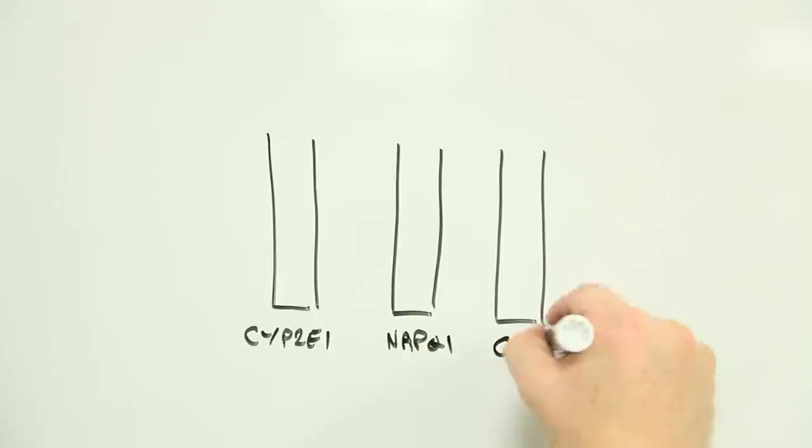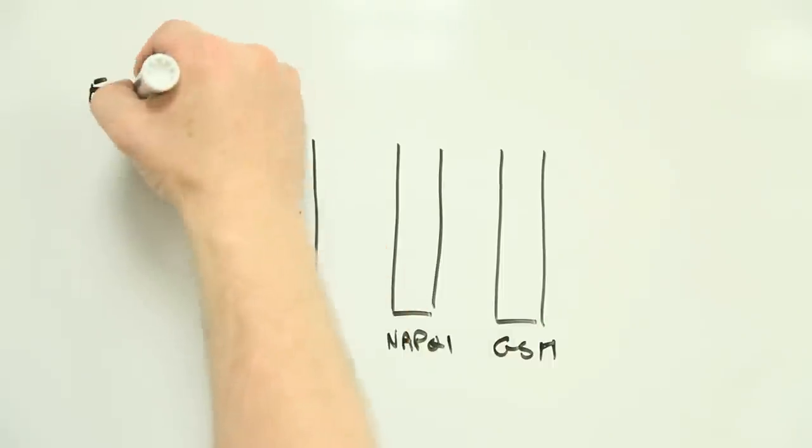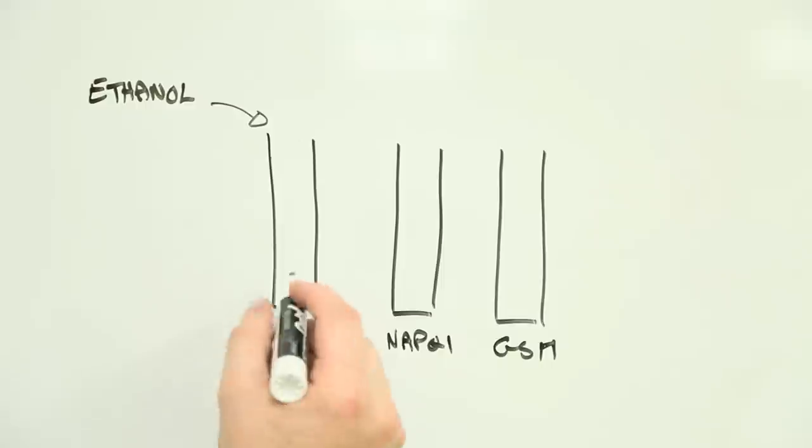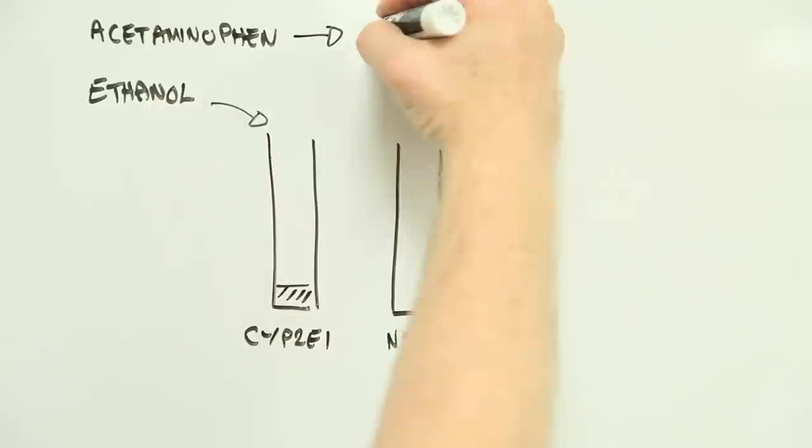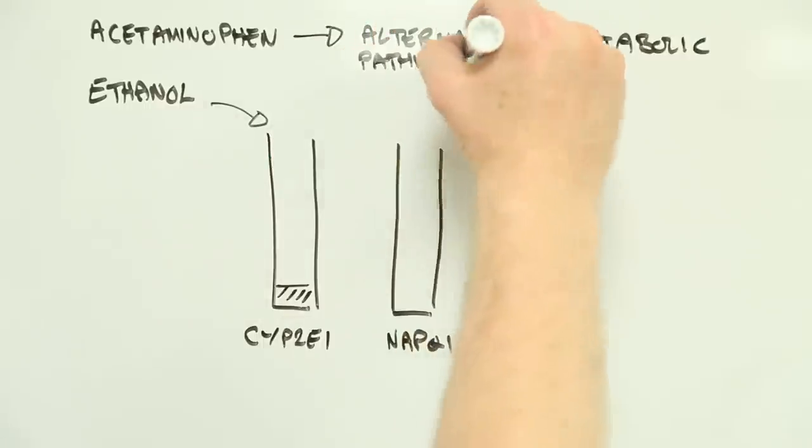And this is where things get interesting. If you aren't a regular drinker, when you do have a drink, your liver will start using CYP2E1 to get rid of the ethanol. Now if you pop a couple of Tylenol a few hours later to take the edge off your hangover, the chances are there's not going to be that much CYP2E1 left to handle it, as the ethanol has mopped up most of what your body can produce. Instead, the alternative acetaminophen metabolic pathways kick in.